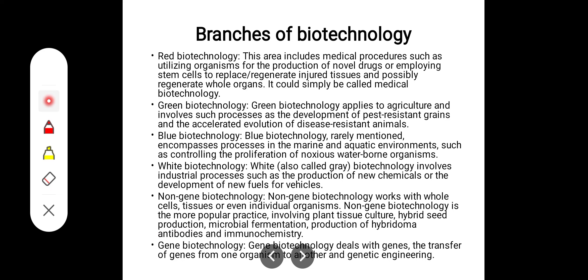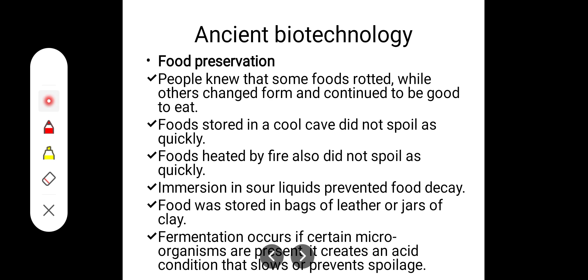Gene biotechnology, as the name indicates, deals with genes and the transfer of genes from one organism to another in genetic engineering. In ancient times, biotechnology existed in the form of food preservation — people knew that some foods rotted while others changed but continued to be good to eat. Food stored in a cool place did not spoil as quickly, and food heated by fire also did not spoil quickly.